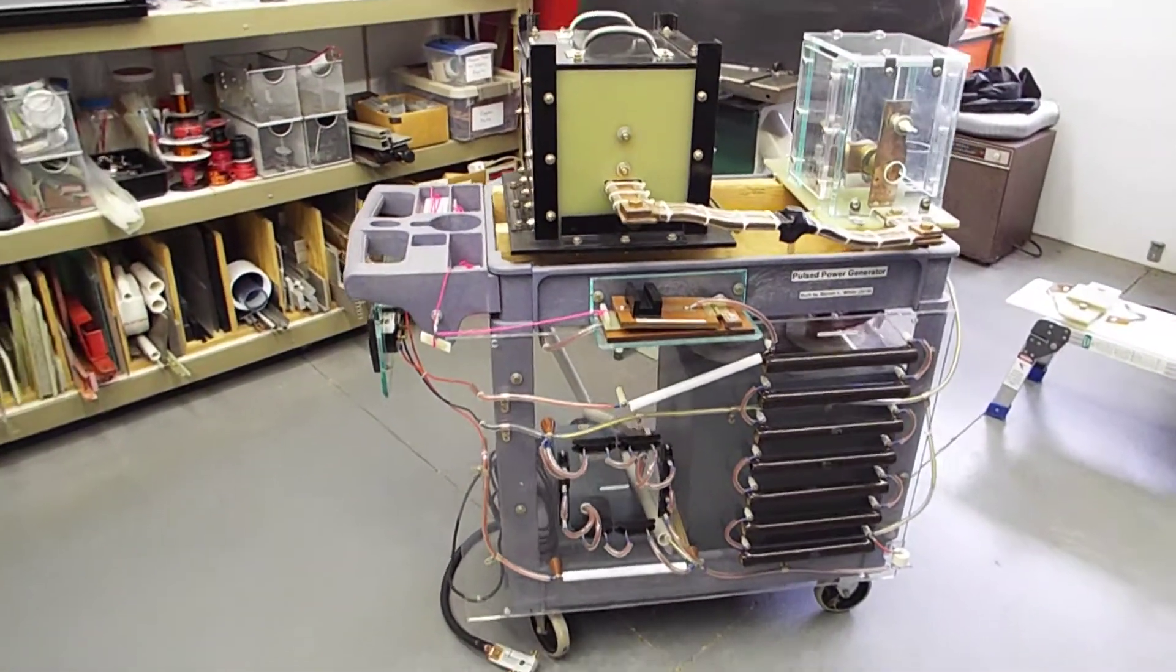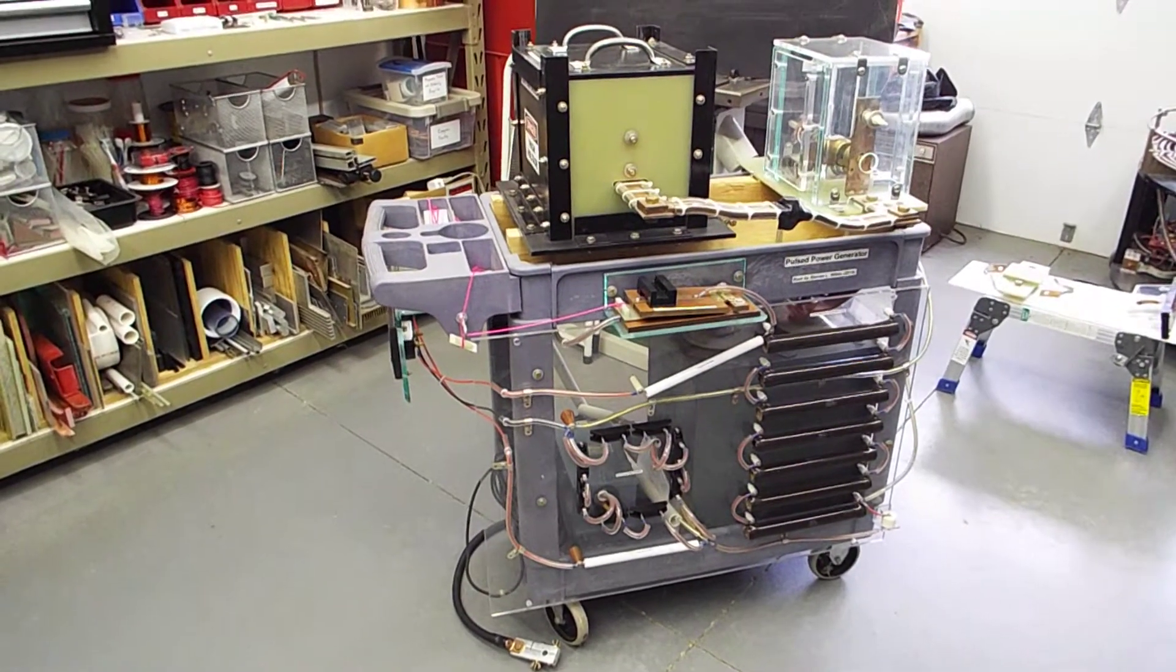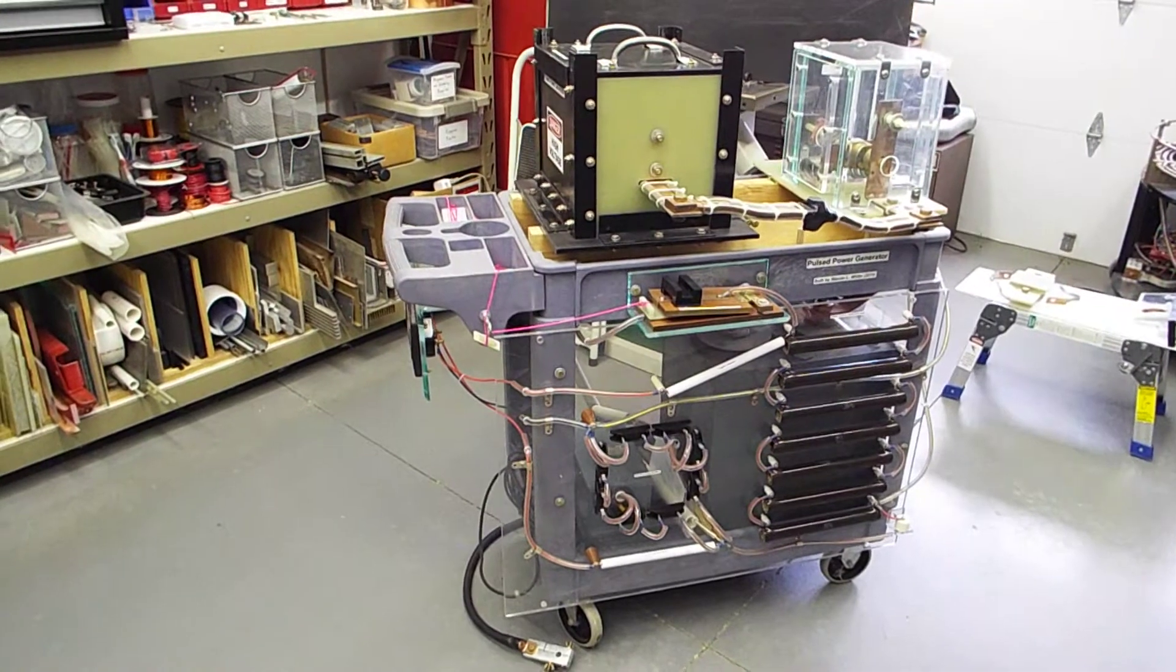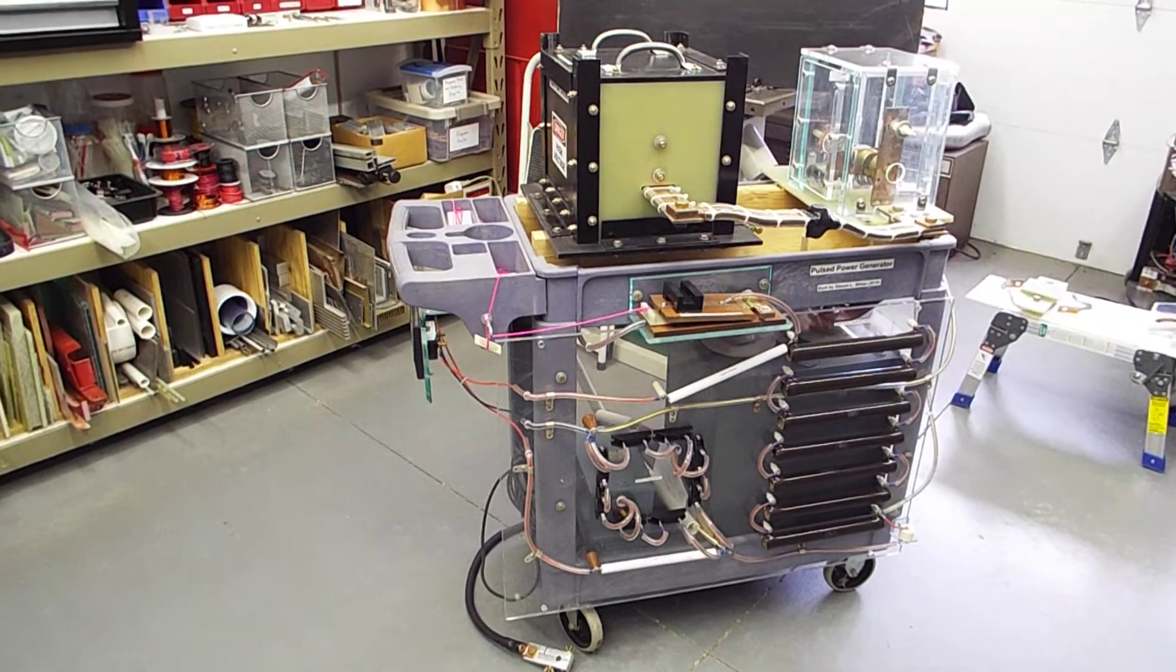This is an overview of my pulse power generator. Basically what it consists of is a giant capacitor and a spark gap switch and a blast box.